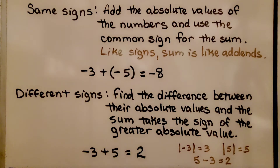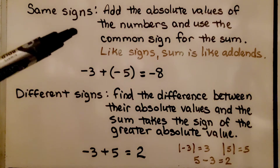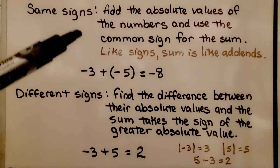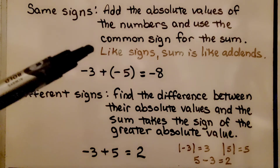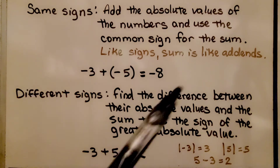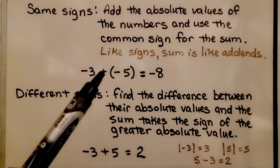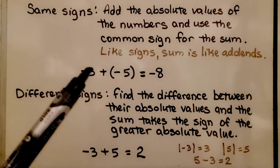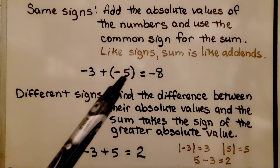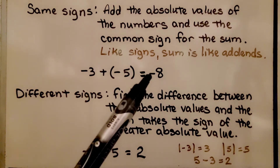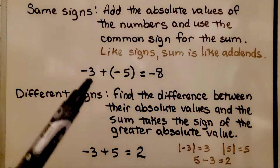Let's quickly review the rules for integer addition. We add the absolute values of the numbers and use the common sign for the sum. If the addends have like signs, the sum will be like the addends. We have negative 3 and negative 5 — we add the absolute values to get 8, and the sum is negative, just like these addends.